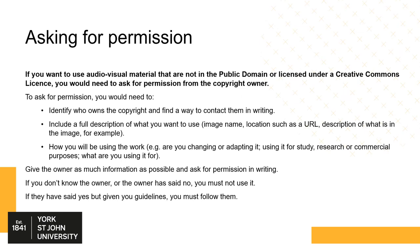There may come a time when you are doing a piece of work — for example, writing a blog post — and you come across an audio-visual work that is perfect for what you require, but it isn't in the public domain or licensed under a Creative Commons licence. You could consider relying on a copyright exception, but this could be somewhat risky, particularly in a professional or commercial capacity. If this is the case, you will need to ask permission from the copyright owner to use that work. Asking for copyright permission can involve a lot of work and isn't always straightforward. You would need to identify who owns the copyright and find a way to contact them, ideally in writing. If you don't know the copyright owner or the owner has said no, you must not use that work.